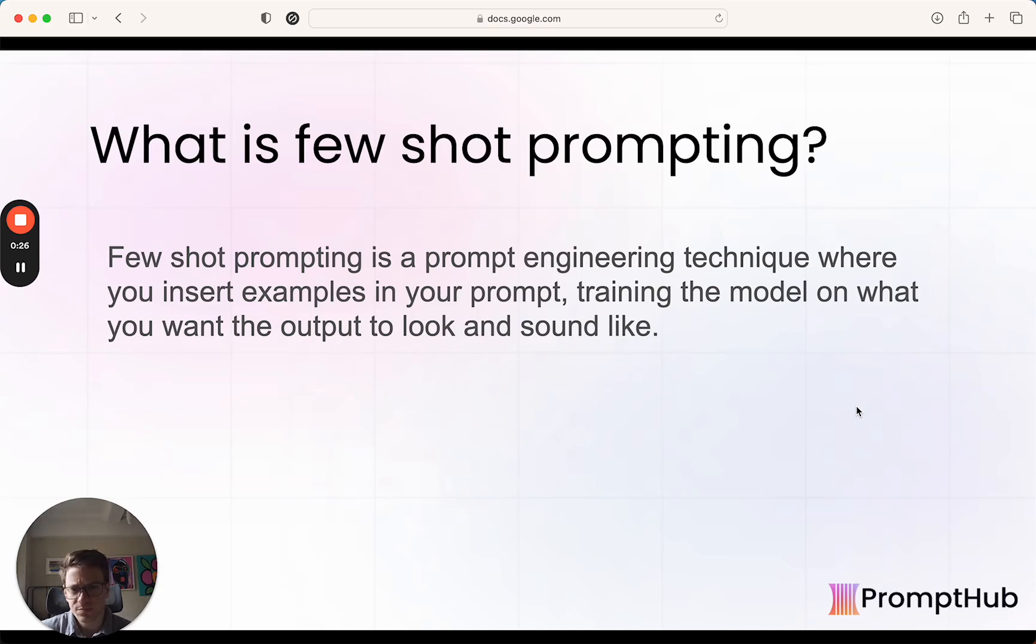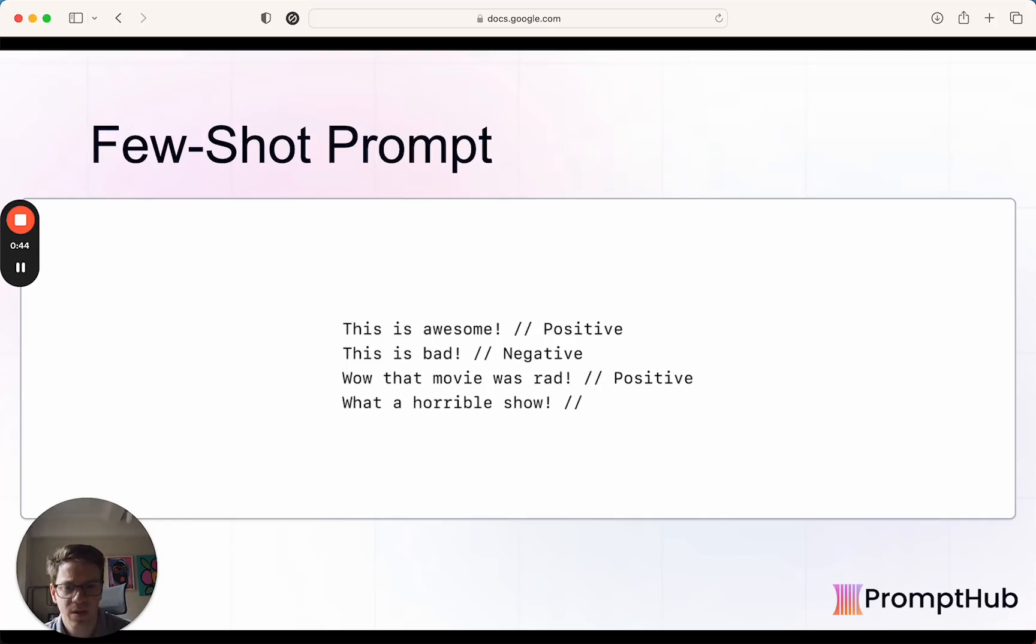So what exactly is few-shot prompting? Basically, it's when you send examples along in your prompt to help guide or train the model on what you want your output to look like, sound like, or the shape of it. It's basically kind of like in-context training of the prompt. It's also called in-context learning.